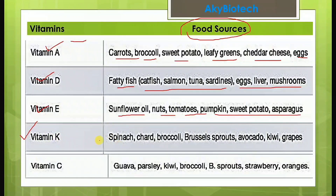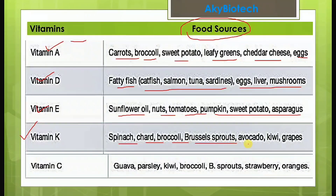Vitamin K is found in spinach, chard, broccoli, Brussels sprouts, avocado, kiwi, and grapes.